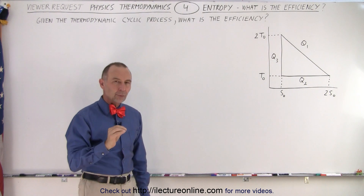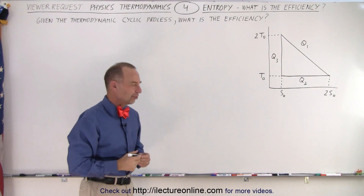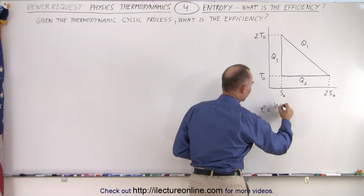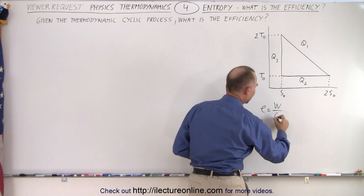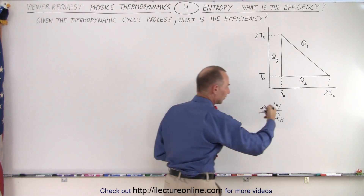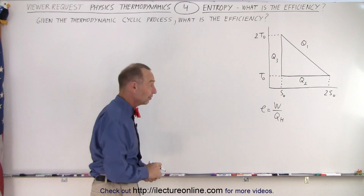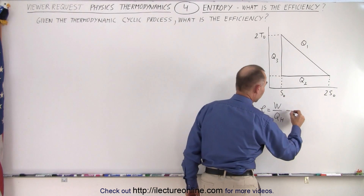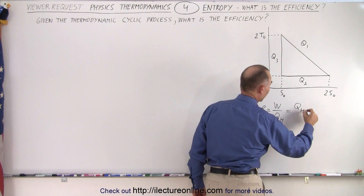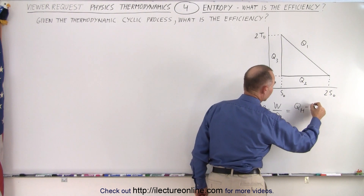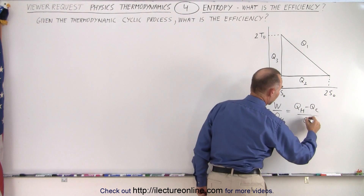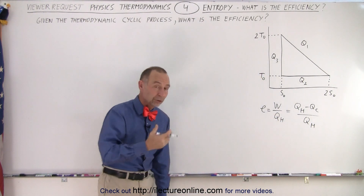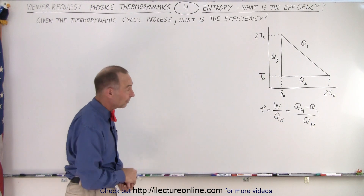So first, let's find out what is the efficiency of an engine. The efficiency is equal to the work done divided by the heat provided — Q sub hot, the heat provided by the hot reservoir. By definition, we know that work done is equal to Q hot minus Q cold, all divided by Q hot. So essentially, we're supposed to find Q hot and Q cold to find the efficiency.